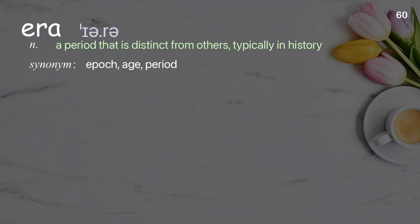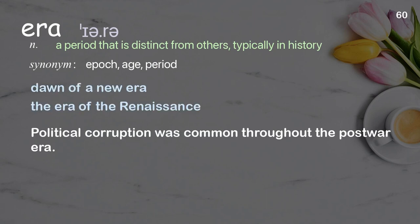Era: A period that is distinct from others, typically in history. Examples: Dawn of a new era. The era of the renaissance. Political corruption was common throughout the post-war era.